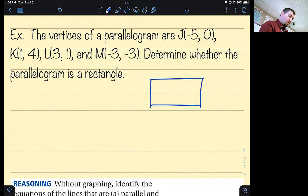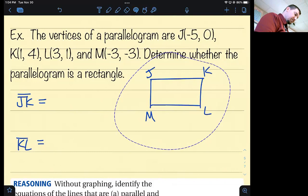Let's say this is J, K, L, and M. It doesn't matter as long as I go in the same order, clockwise or counterclockwise. JK and KL have to be perpendicular. I'm going to find the slope of segment JK and segment KL and see if their slopes are negative reciprocals.